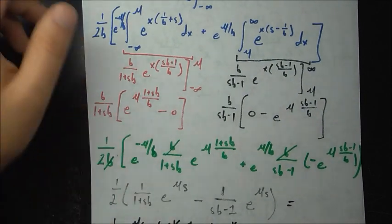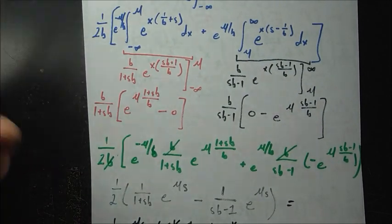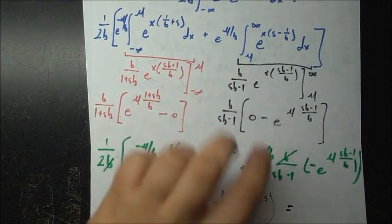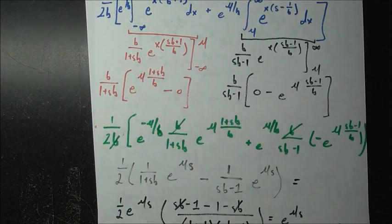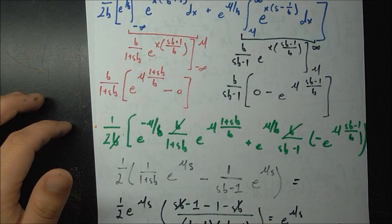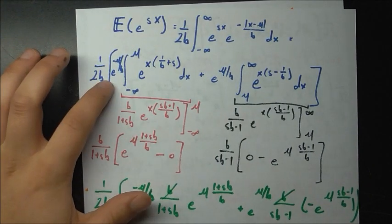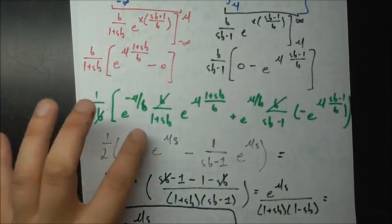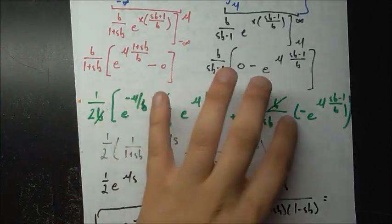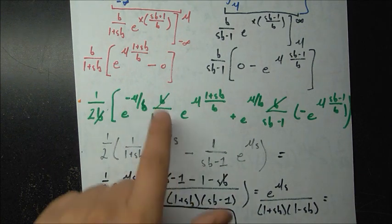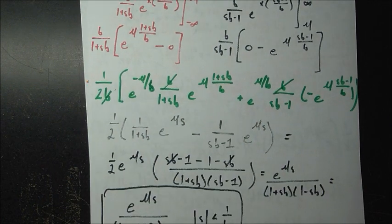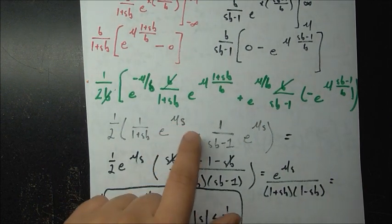These are just standard exponential integrals, so there is nothing fancy. I evaluated both and plugged them back into the formula. We have one over 2b, and the answers to the two integrals — with some b cancellations appearing.